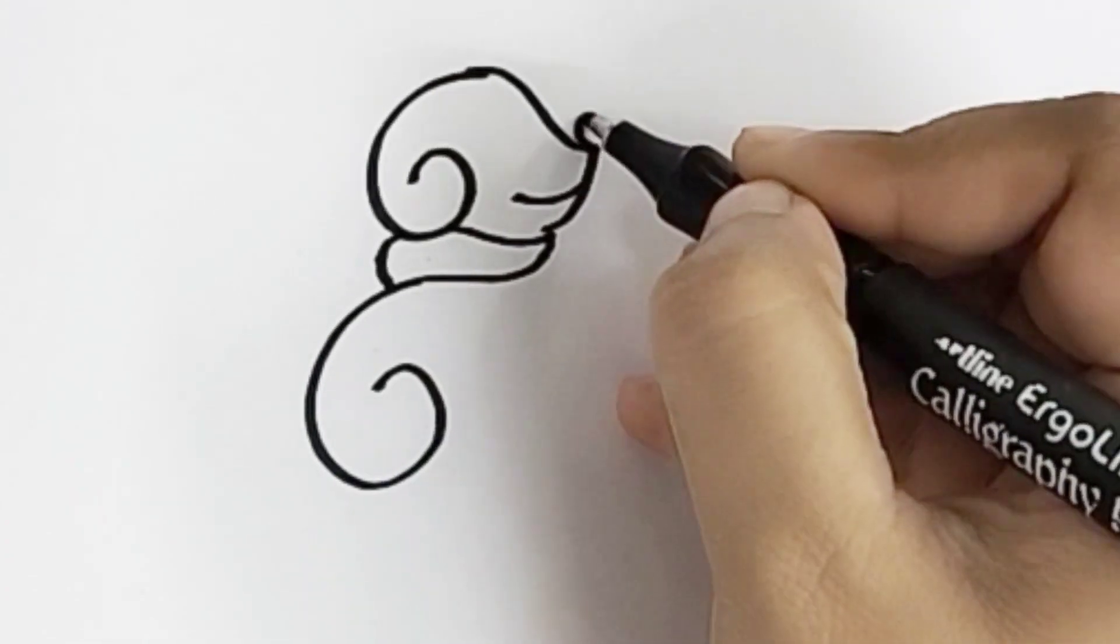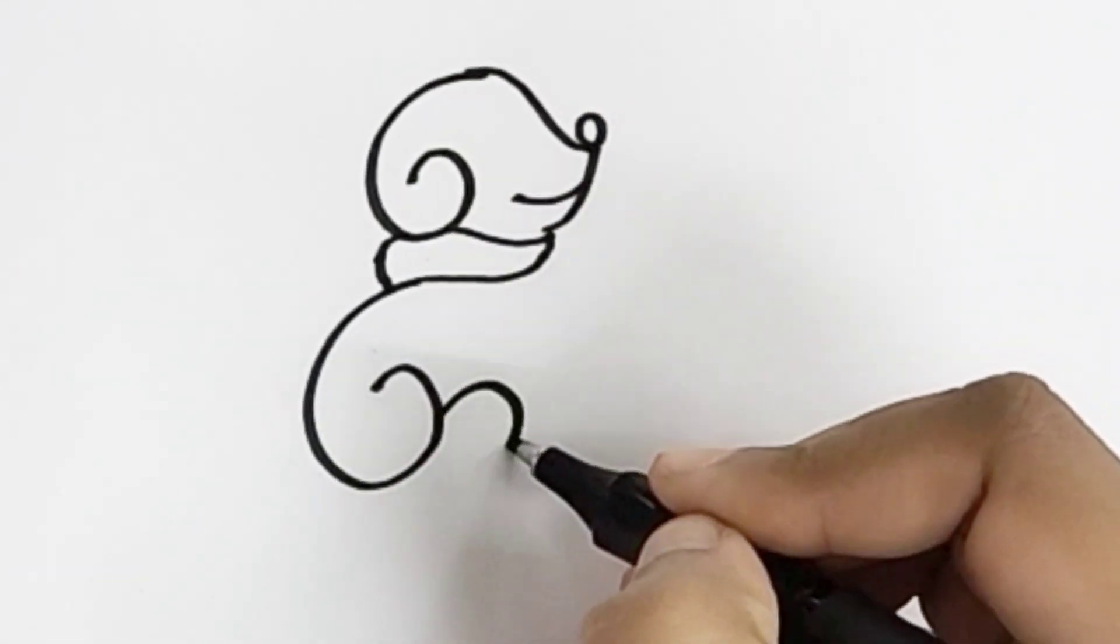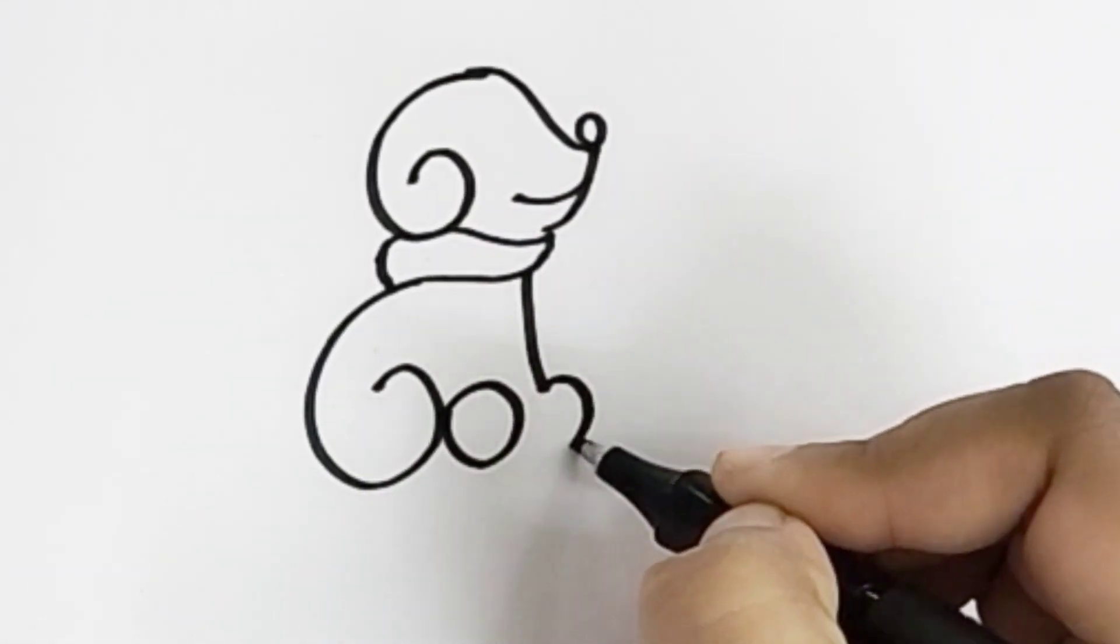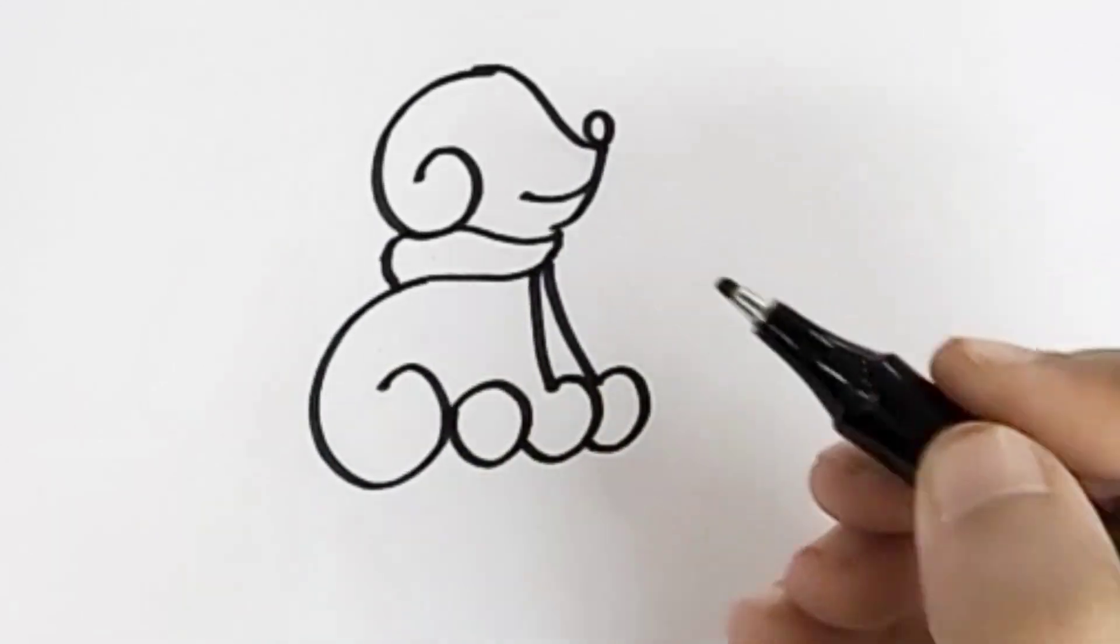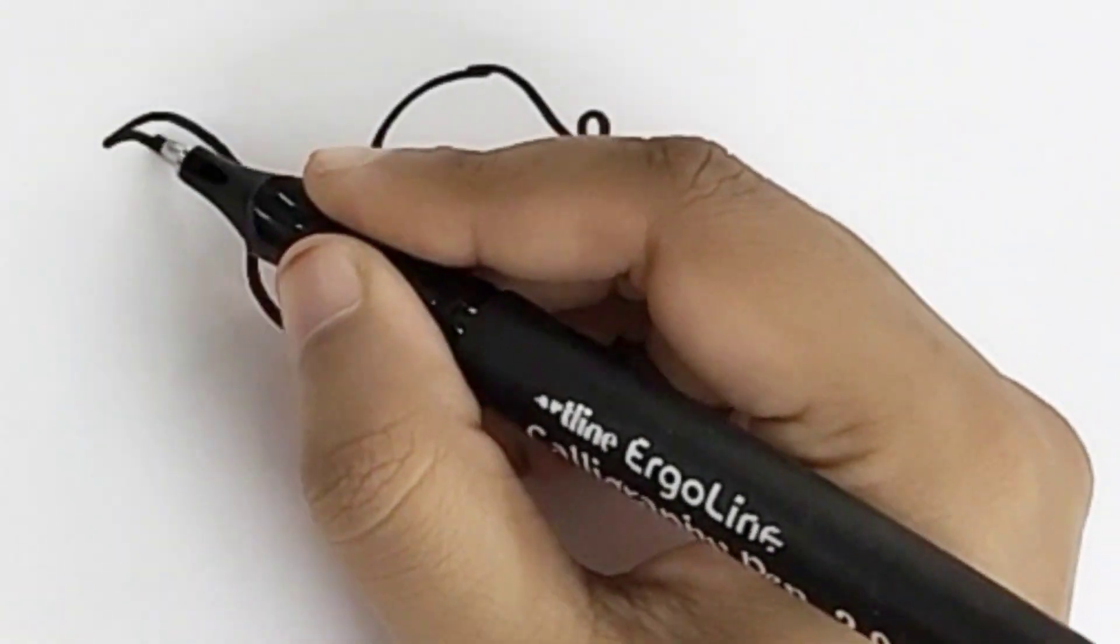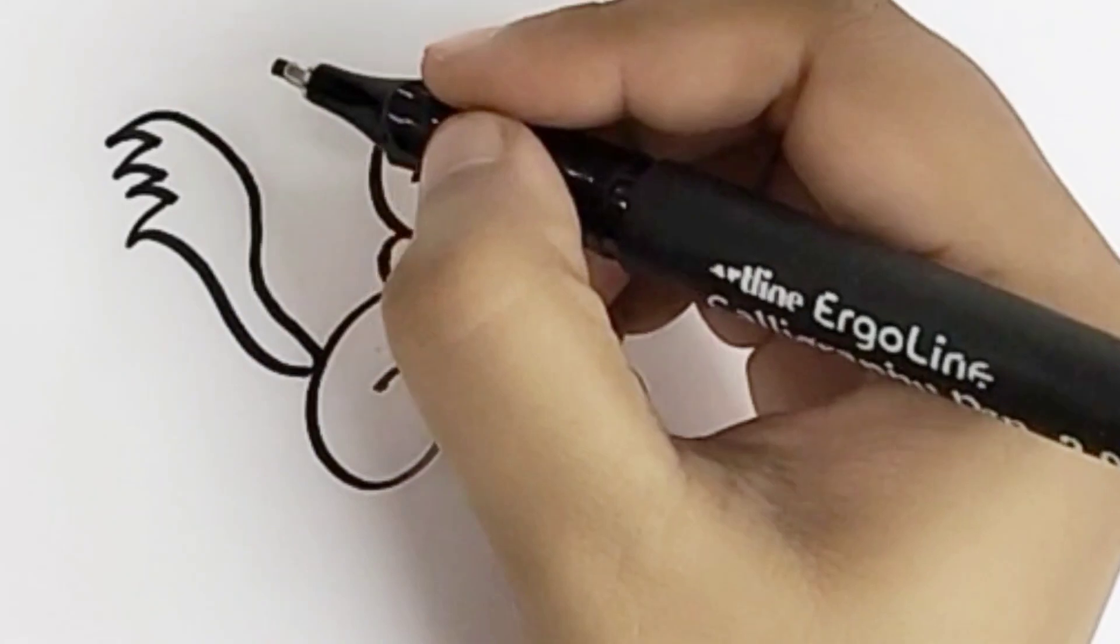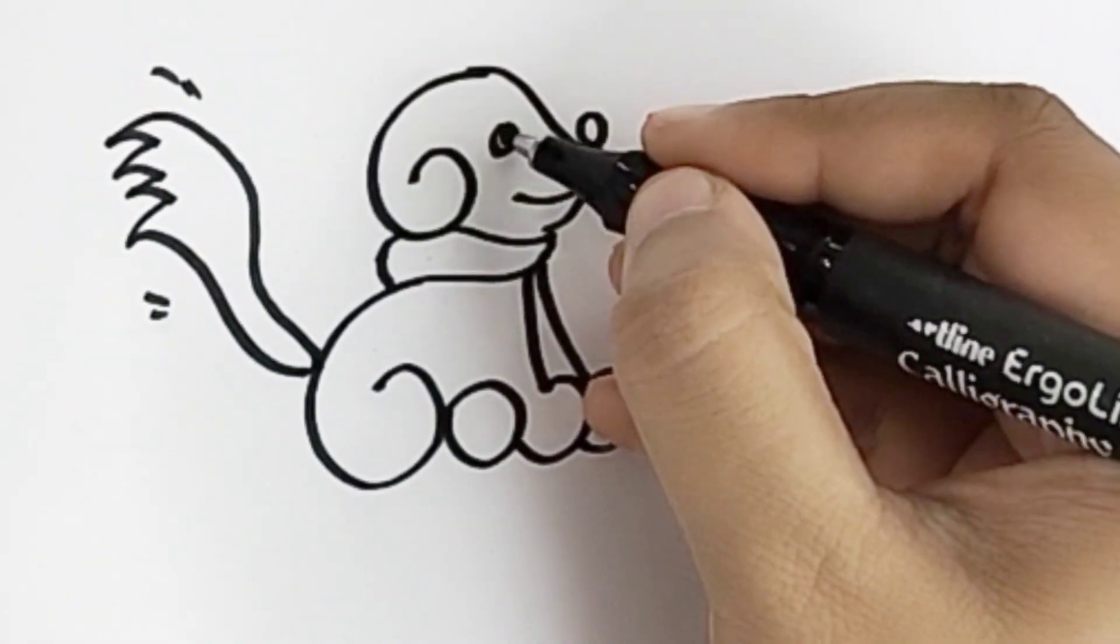First you draw with the pencil, and then you can do the outlining using black sketch pen or black marker.